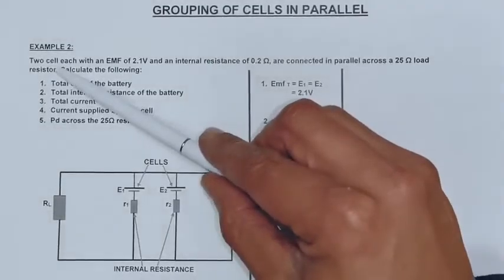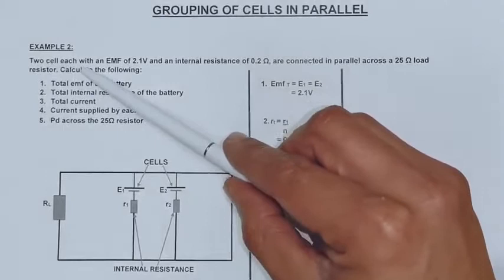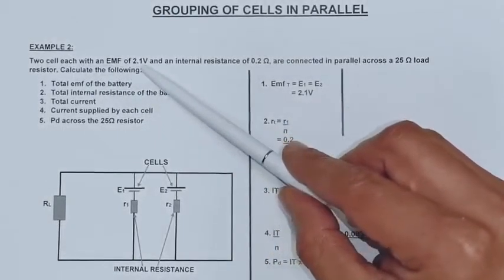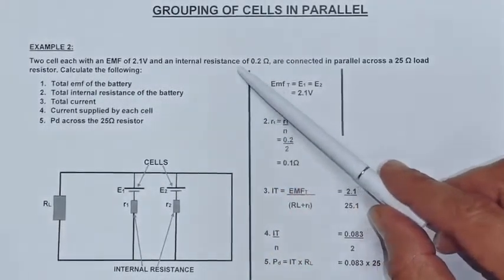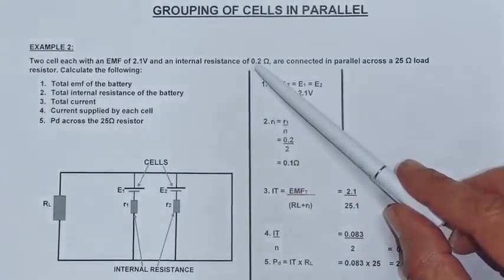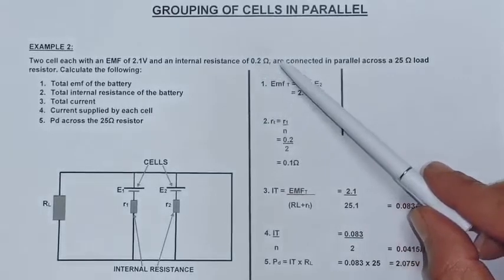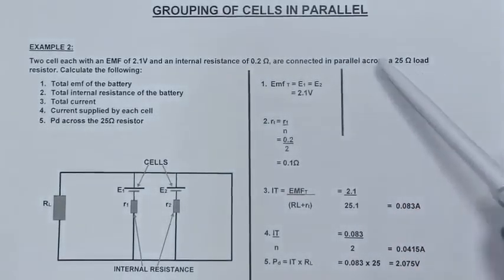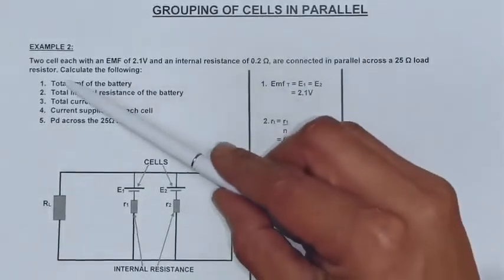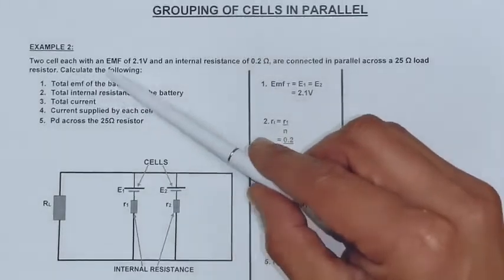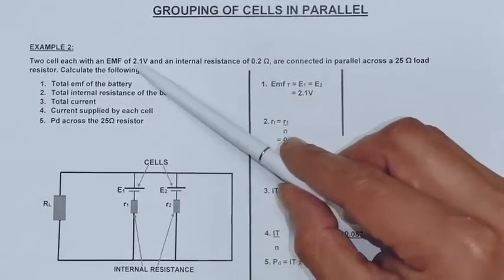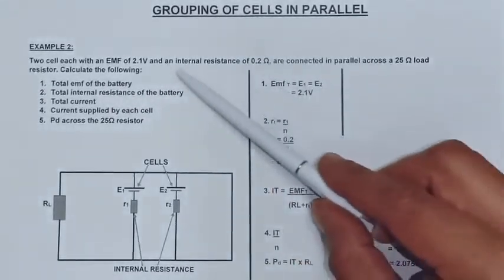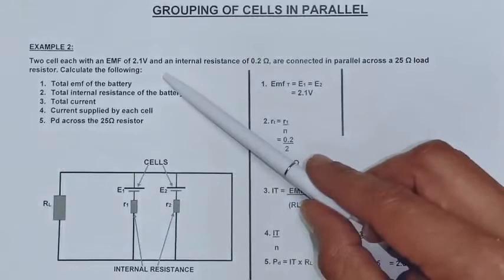Two cells each with an EMF of 2.1 volts and the internal resistance of 0.2 ohm are connected in parallel across a 25 ohm load resistor. Calculate the following. You can see I am using the same values as in the series circuit.